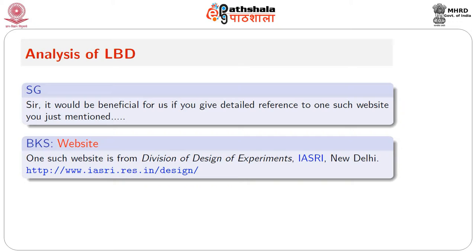If the design is not available they will mention why not; if it is there they will mention which theorem was used to construct it. Hundreds of designs are available. These are deep theorems that have been mentioned. It is particularly developed for agricultural experiments because they use a lot of BIBDs and their extensions. They also give the analysis of the design — you get the design, give the parameters, and they have illustrative examples showing how to do the inter-block analysis, computation of sum of squares, average variance, etc.